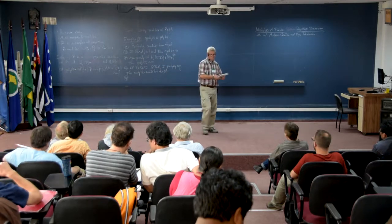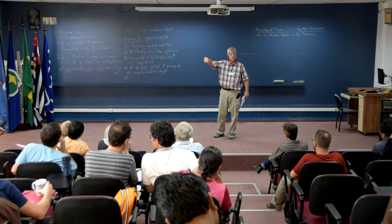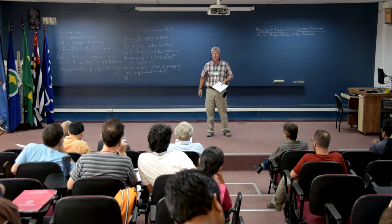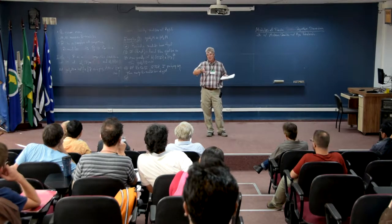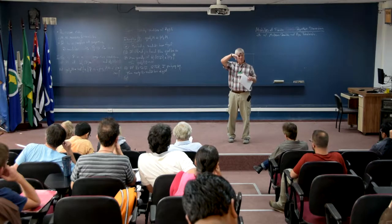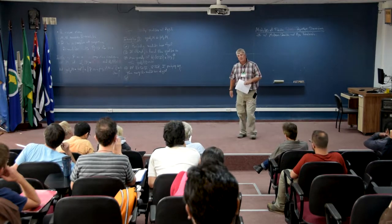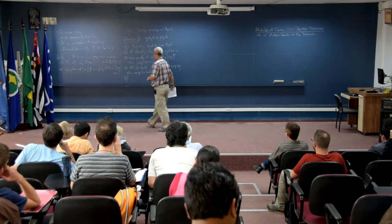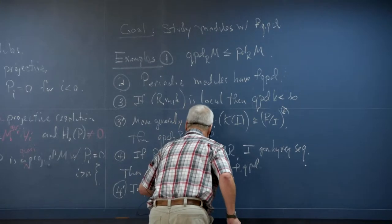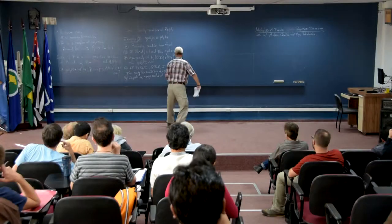Why? You can just take a resolution of any module M over Q and tensor that down with R — you're really computing a Tor. But you could compute the Tor by taking a resolution of R and tensoring with M. A resolution of R is just the Koszul complex, and all the maps in the Koszul complex are elements of the regular sequence which annihilate M, so when you tensor with M you just get copies of M in the homology. So every module over such a ring — in particular over a complete intersection — has finite quasi-projective dimension.